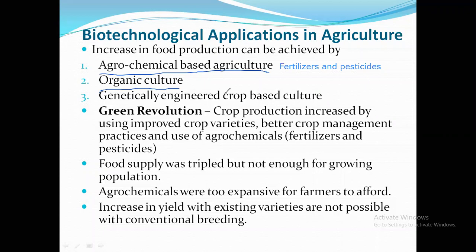The basic problem of the organic method is that productivity did not increase very much. It is natural and safe, but it was not giving very high yield or high productivity. Agrochemical-based culture gave very high productivity, but its disadvantage was that chemical fertilizers caused a lot of pollution. Bio-magnification of pesticides like DDT caused much harm. Productivity was increasing, but they were causing harm, so we had to find an alternative method.